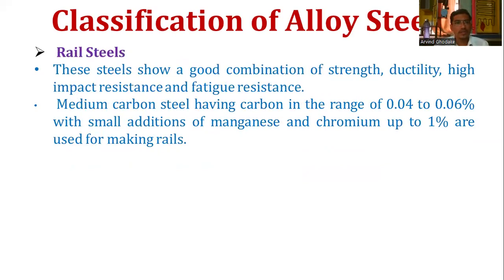The next classification is rail steel. These steels show a good combination of strength, ductility, high impact resistance, and fatigue resistance. Medium carbon steel having carbon in the range of 0.04 to 0.06 percent, with a small addition of manganese and chromium up to one percent, is used for making rails.